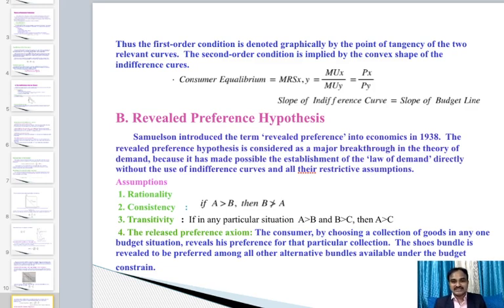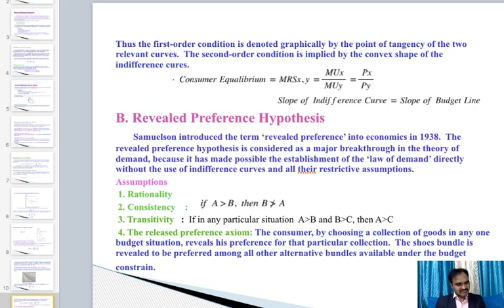Transitivity states that if A > B and B > C, then A is always greater than C. The implication is that if the consumer prefers A over B and B over C, then A is always preferred over C.